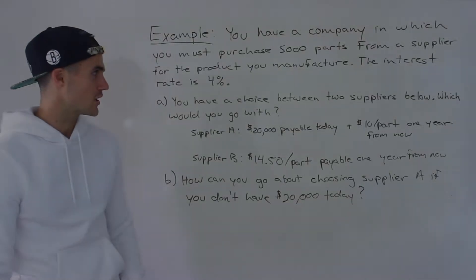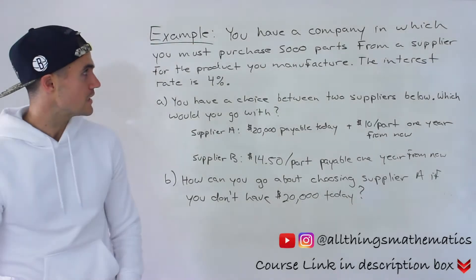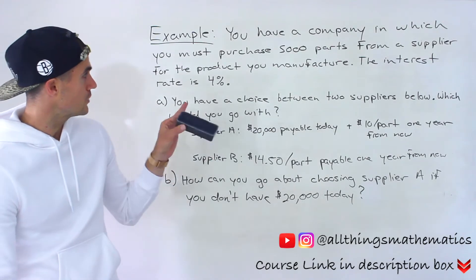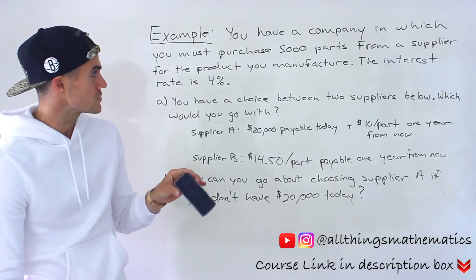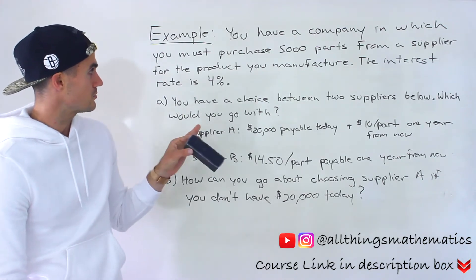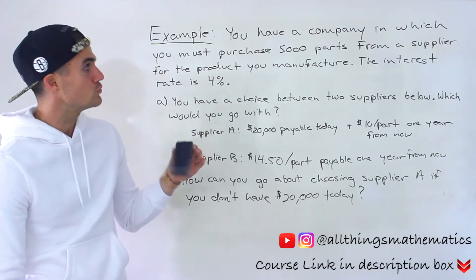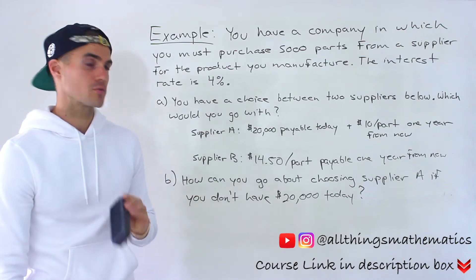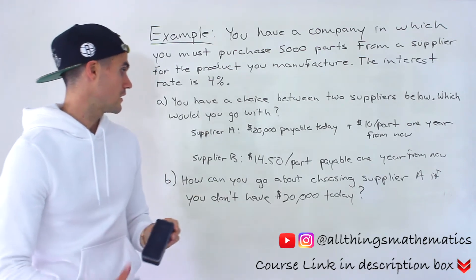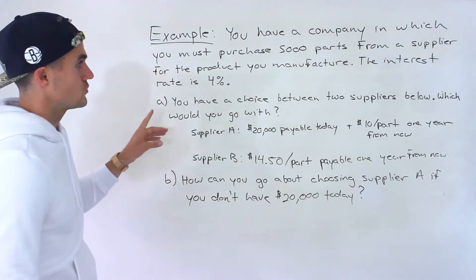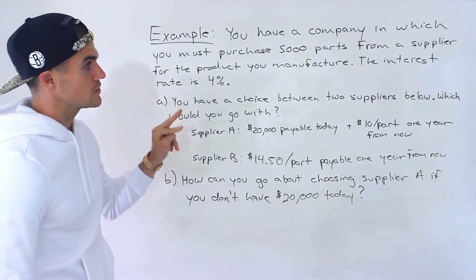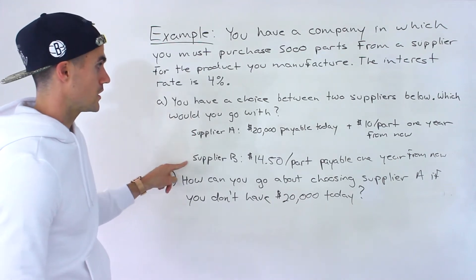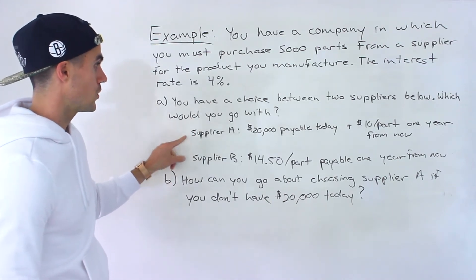Welcome back everyone. Patrick here. Moving on to the next question. You have a company in which you must purchase 5,000 parts from a supplier for the product you manufacture. The interest rate is 4%, and there are two questions here. You have a choice between two suppliers: supplier A and supplier B. Which would you go with?